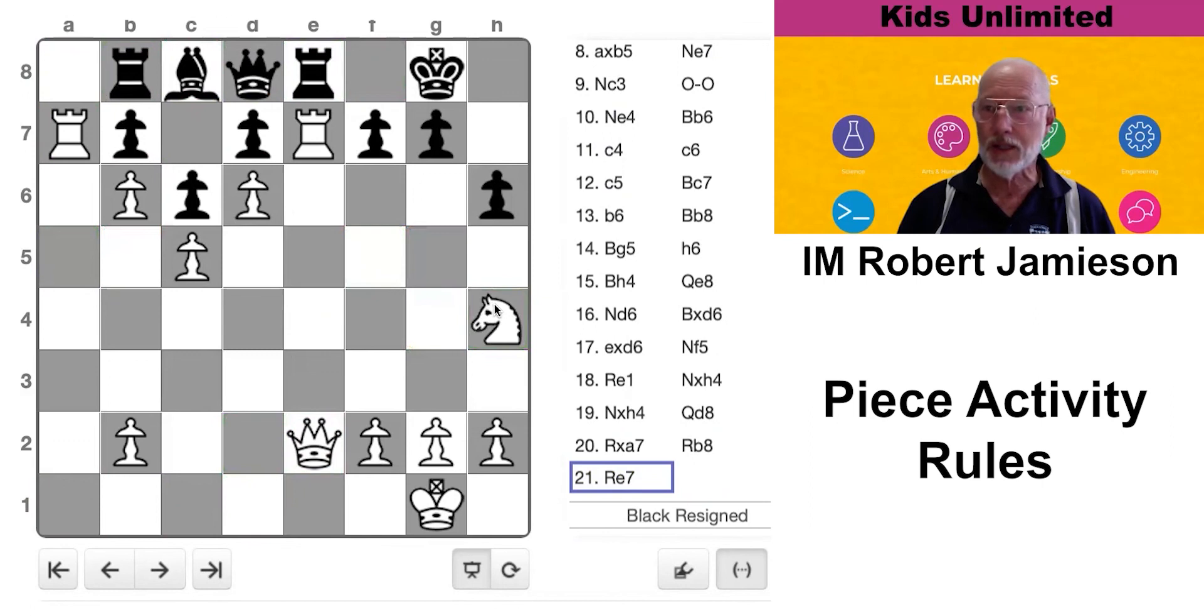Basically, my opponent was really hopeless at activating his pieces. He had the chance to play d5, give me a pawn back, get his pieces out, but he was trying to hang on to everything without giving away material, and it just got worse and worse for him.